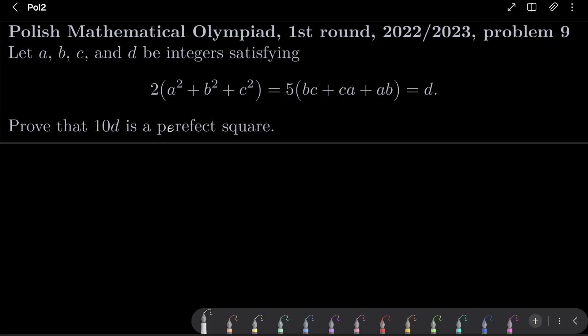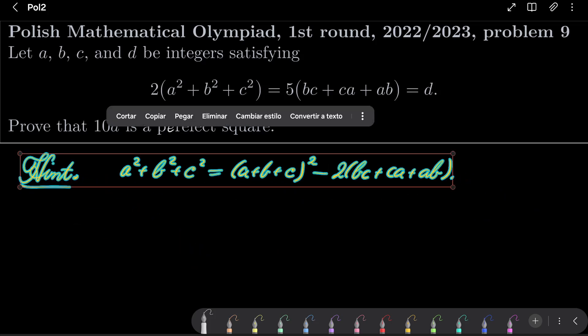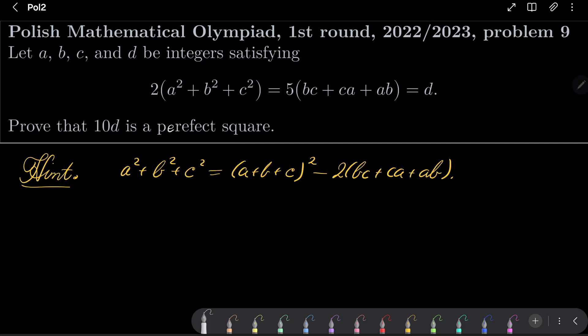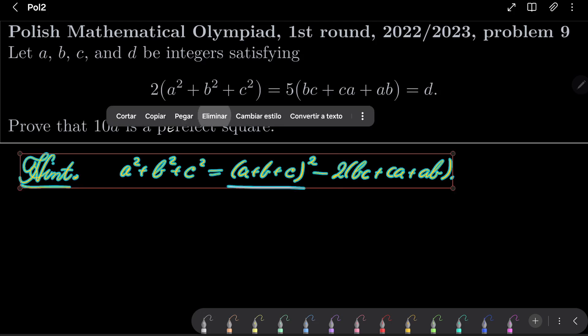Here is my hint for this problem: use the fact that a² + b² + c² can be written as a square minus another quantity, and try to get the result from there. Give this problem a try and I will see you in just a minute.